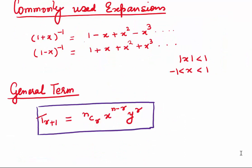Let's come to some commonly used expansions. The first one: 1 plus x to the power minus 1, when expanded, gives 1 minus x plus x squared minus x cube and so on. If we replace x by minus x and expand 1 minus x to the power minus 1, we get 1 plus x plus x squared plus x cube and so on. In the first one the terms are alternately plus minus; in the second all terms are positive. Both are infinite series, valid if and only if the modulus of x is less than 1.